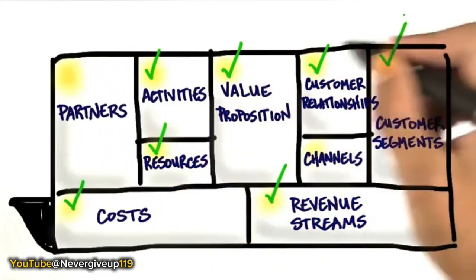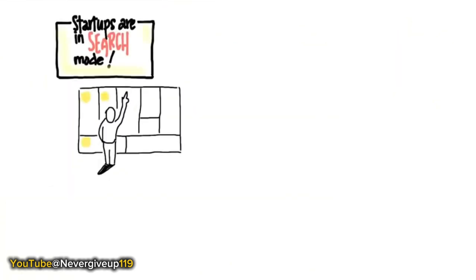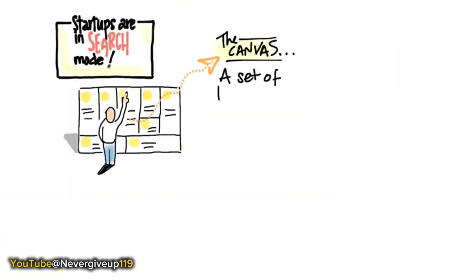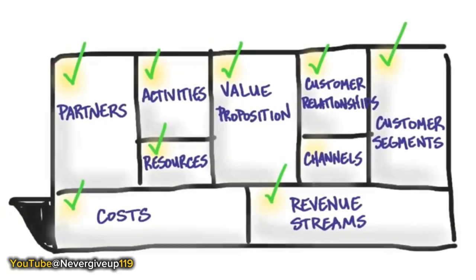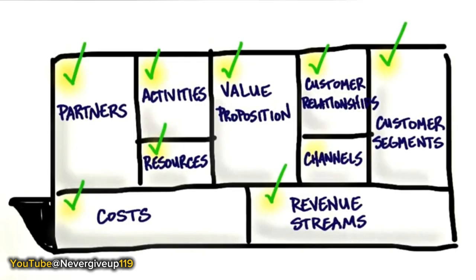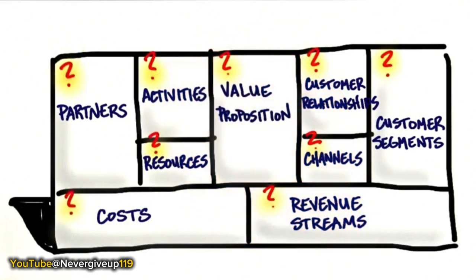When we put all these together, we have a great series of hypotheses. The word 'hypotheses' is what I call a $50 word - it sounds important, and I use it when I teach this class in universities. But really, hypotheses is just a fancy word for guesses. When you fill out the business model canvas, all you have is a series of guesses. That's it.